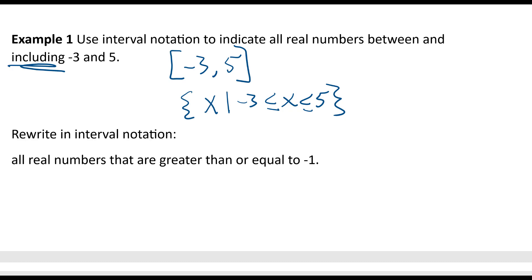And let's do the next one. Rewrite in interval notation all real numbers that are greater than or equal to negative 1. So that means negative 1, it's greater than or equal to, it's negative 1, it's the low point, comma, to infinity. Now I want to stress something here. Infinity always has a parenthesis with it because you're never at infinity.